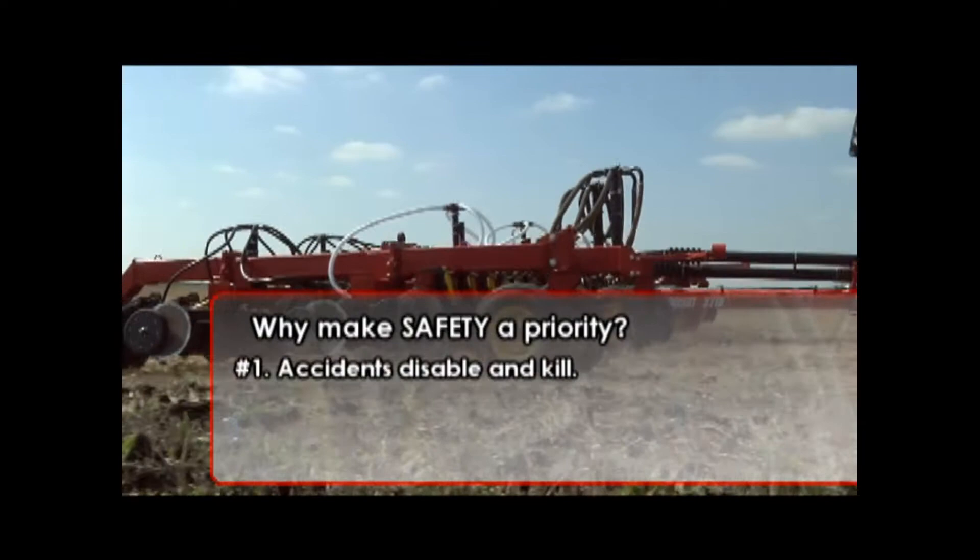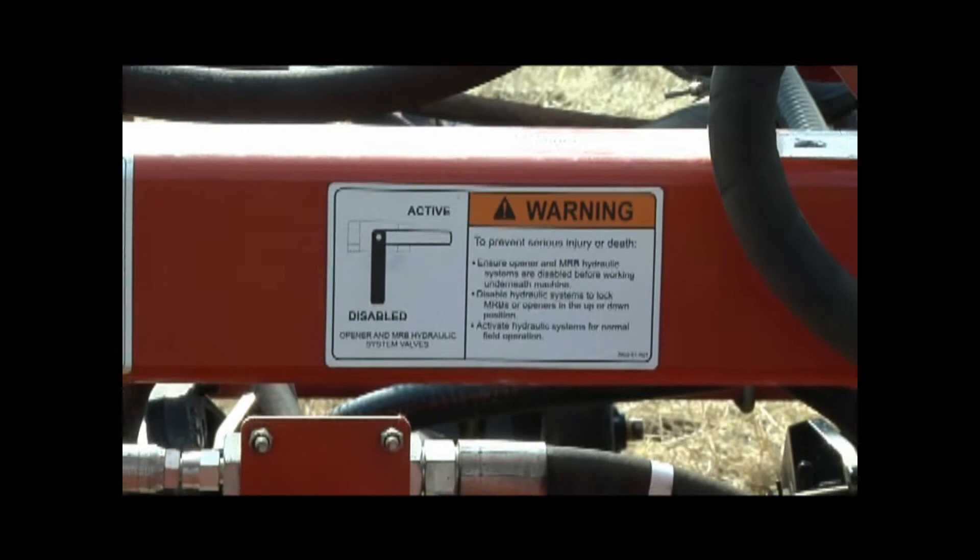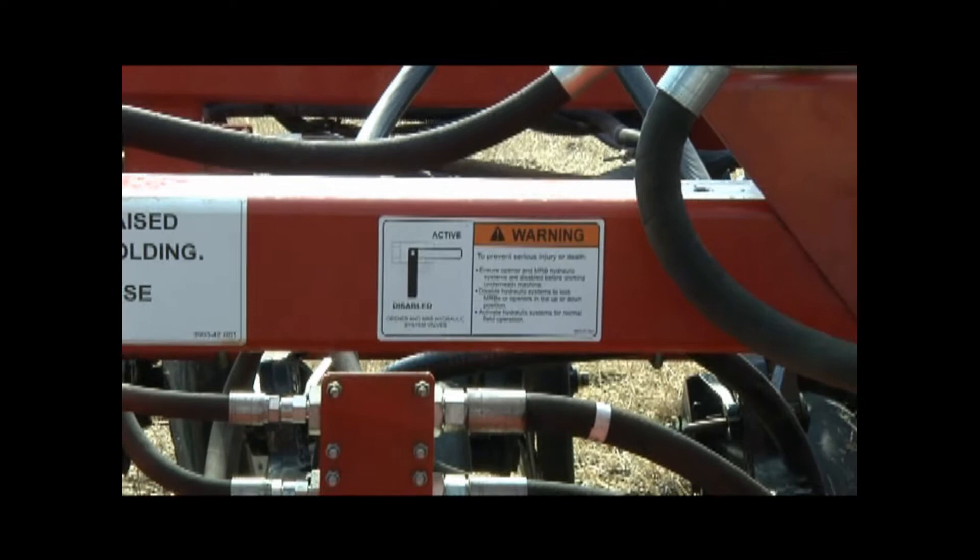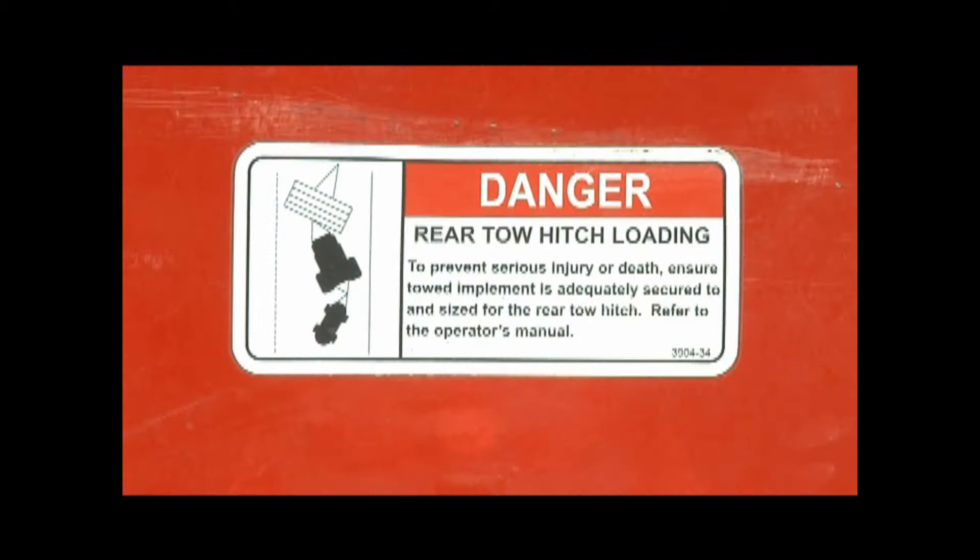Why should you make safety a priority? Three reasons: accidents disable and kill, accidents cause downtime and cost money, and accidents can be avoided. The safety alert symbol identifies important safety messages on the implement and in the manual. When you see this symbol, be alert to the possibility of personal injury or death.